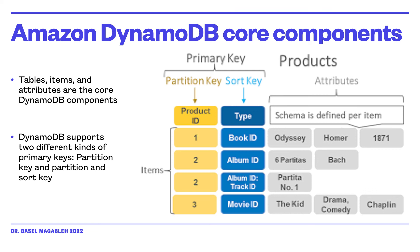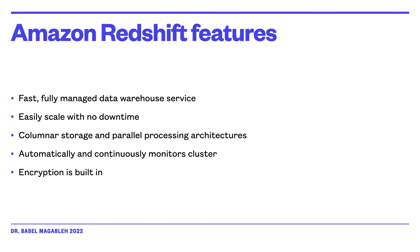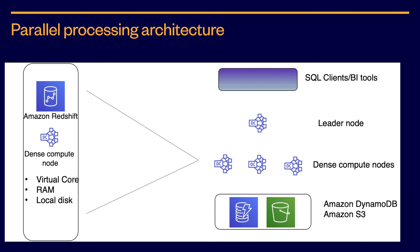Now let us look at Amazon Redshift. Amazon Redshift is a fast, fully managed data warehousing service that makes it simple and cost-effective to analyze all your data using standard SQL and your existing business intelligence tools. Building a data warehouse is complex and expensive — it can take months and significant financial resources to set up. With Amazon Redshift, it is fast and powerful, fully managed, and simple to set up, use, and scale. It enables you to run complex analytics queries against petabytes of structured data using sophisticated query optimization, columnar storage on high-performance local disk, and massively parallel data processing.